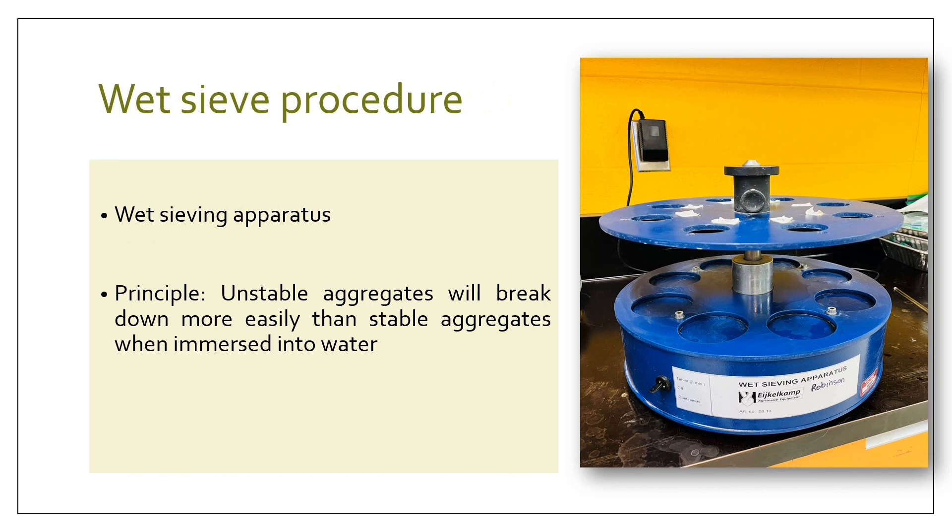The wet sieve procedure involves the use of wet sieve apparatus to determine the aggregate stability of the soil. This method is especially useful for researchers and soil scientists. It generally works on the principle that unstable aggregates will break down more easily than stable aggregates when immersed into water.